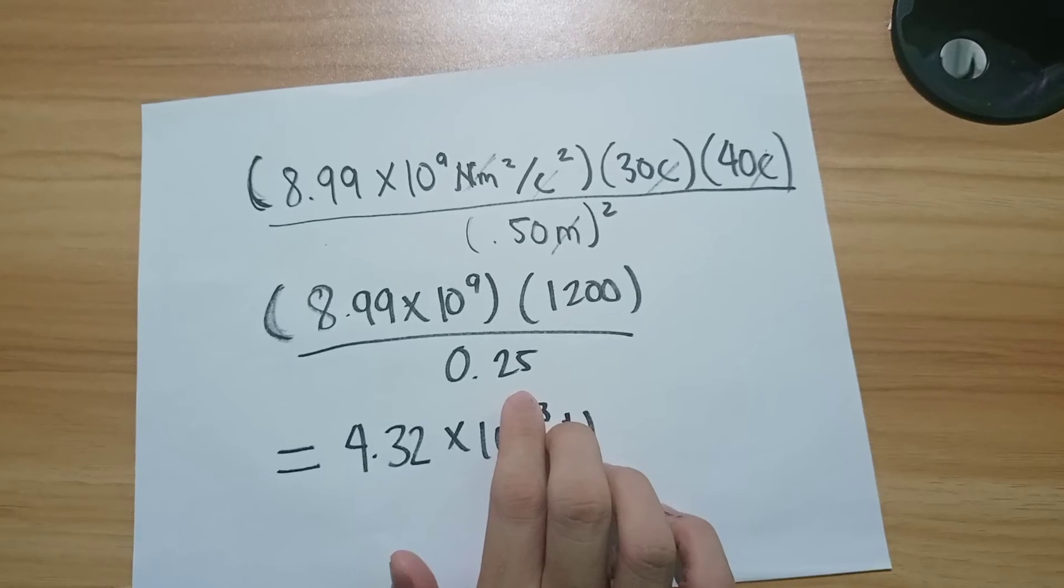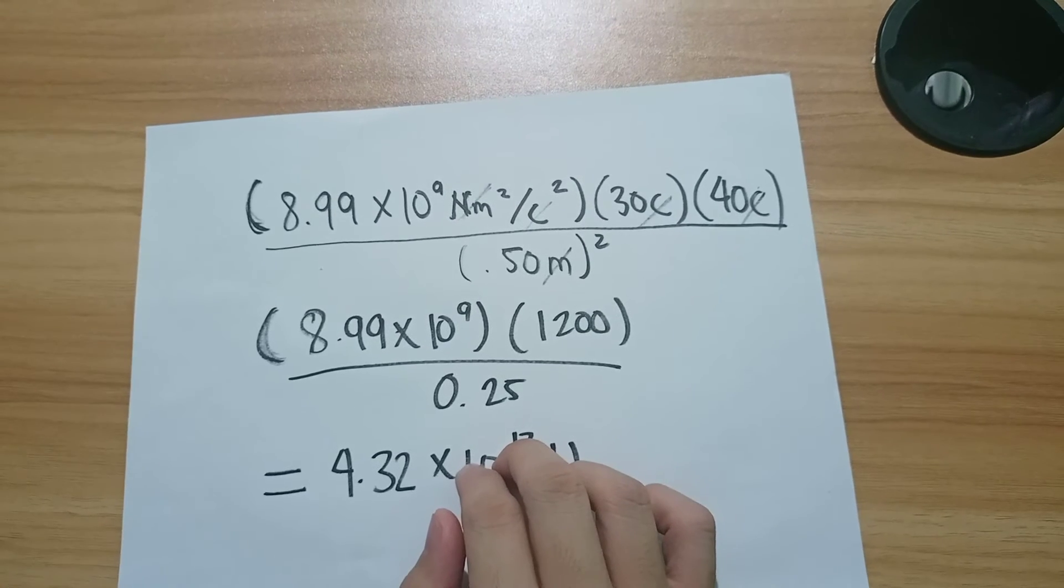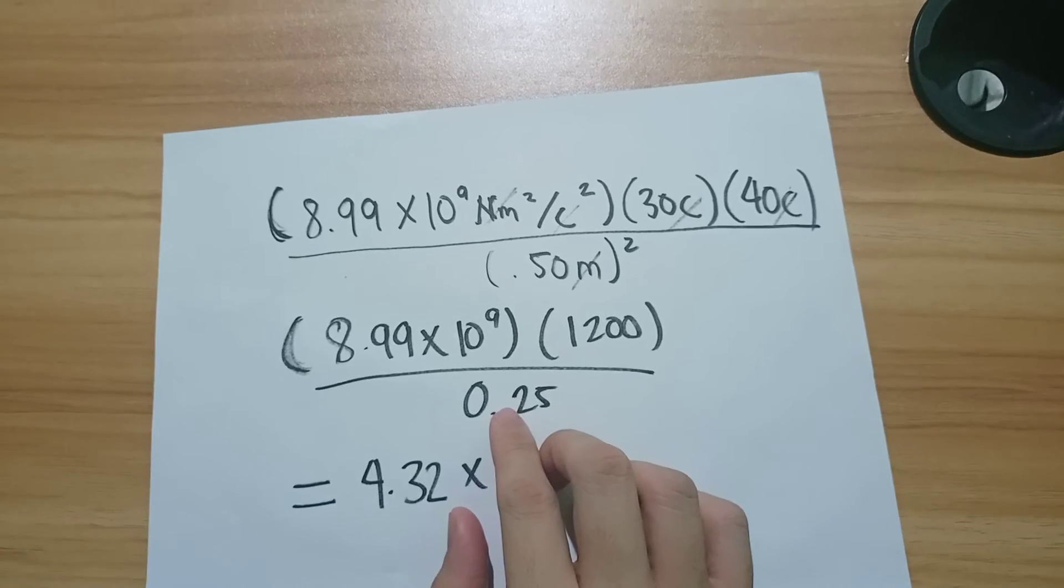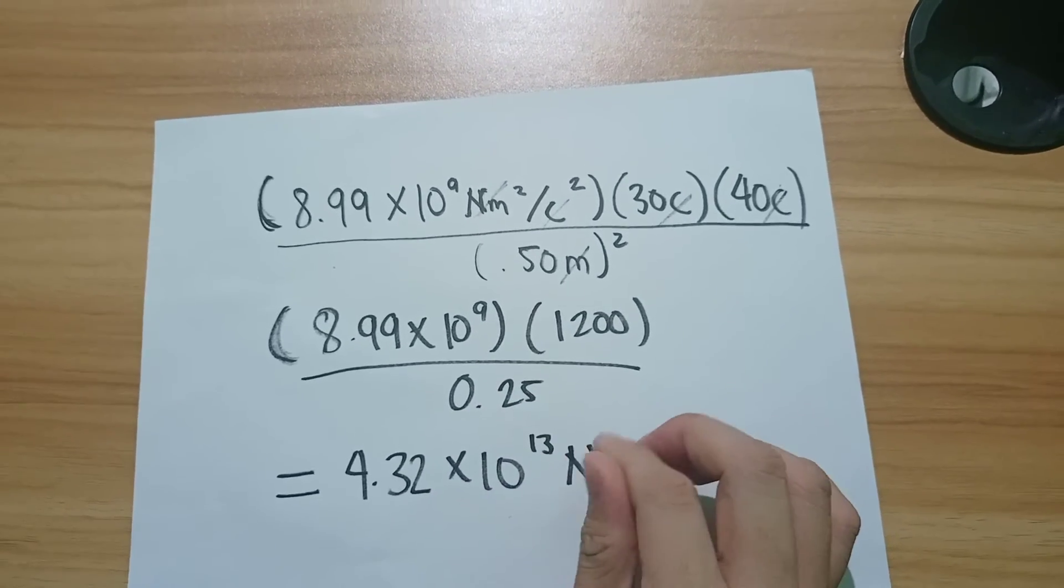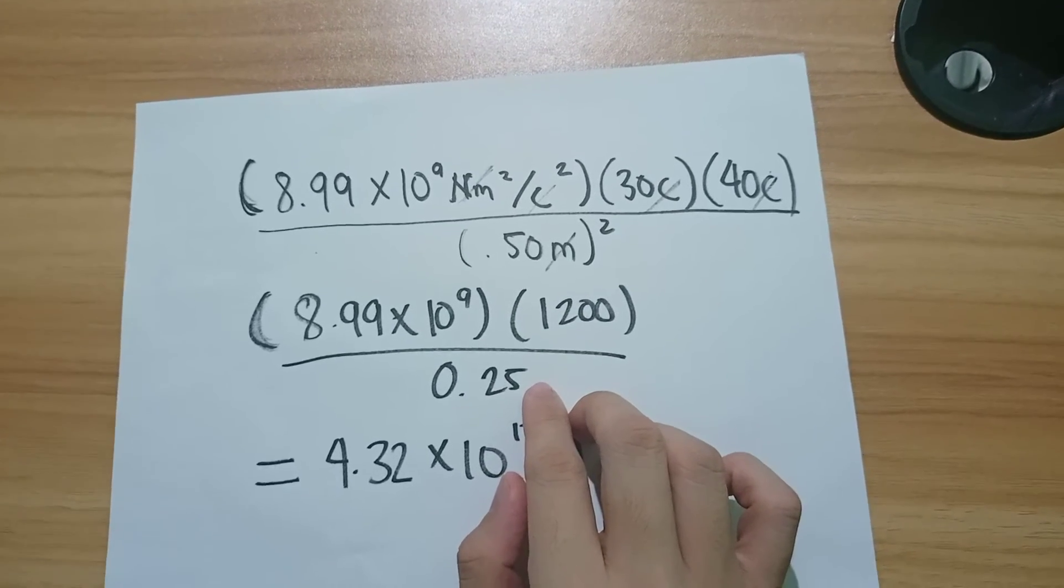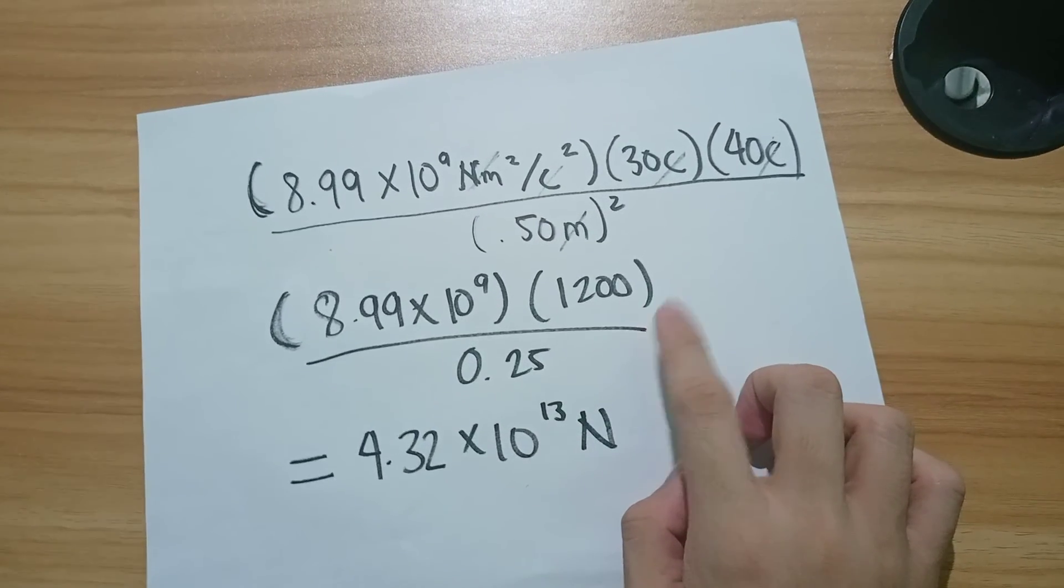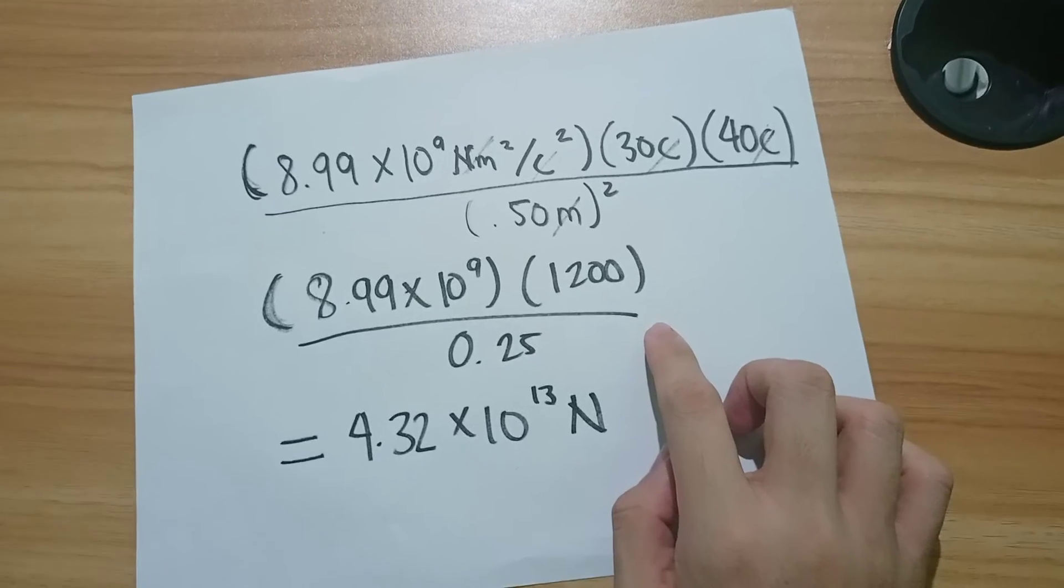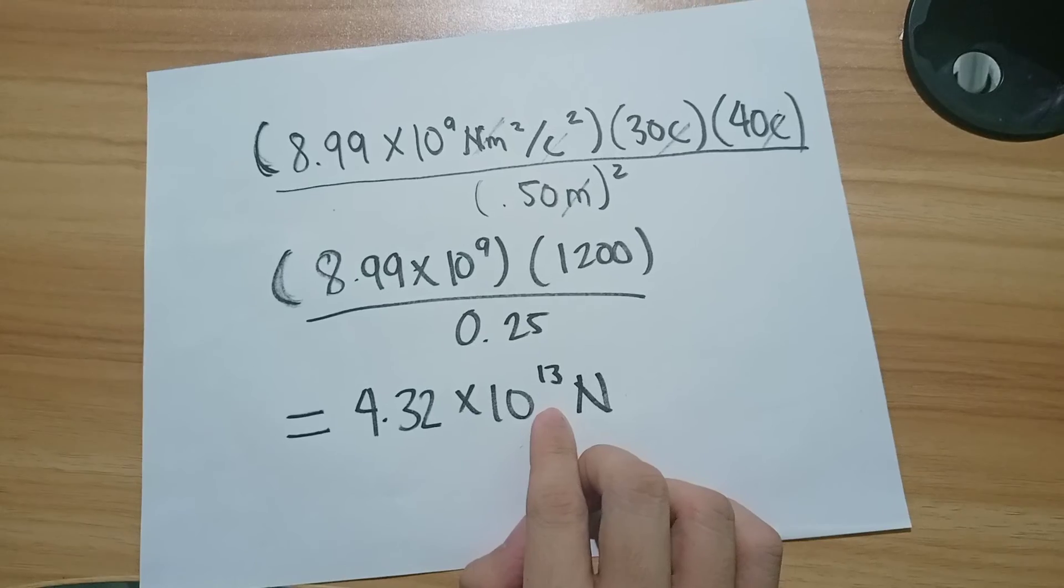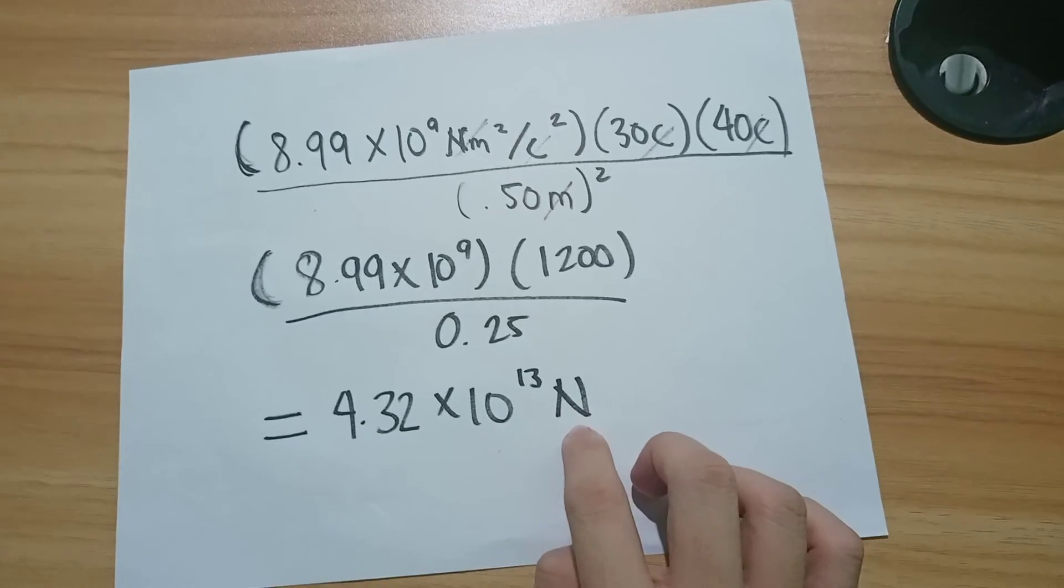And now the third step is to calculate it all, which is the constant K, 8.99 times 10 to the power of 9, multiplied by 1200, then divided by the 0.25 radius. And now this is the total of all the calculations, which is 4.32 times 10 to the power of 13. And this is now our force, which is N Newtons.